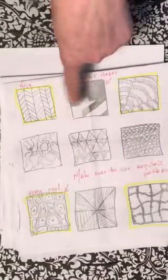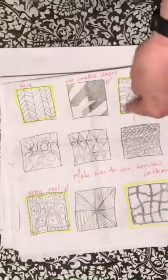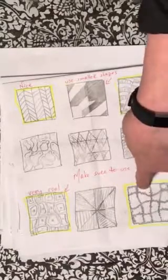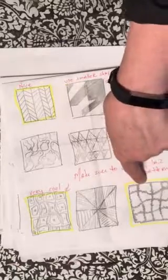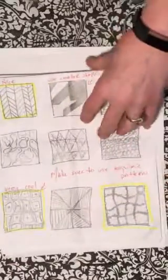This one, the shapes are a little big for Zentangle. This one, it starts to get a little scribbly. This one looks purposeful. The lines are etchy, sketchy, but they look like they were done on purpose, and that's what you're looking for.